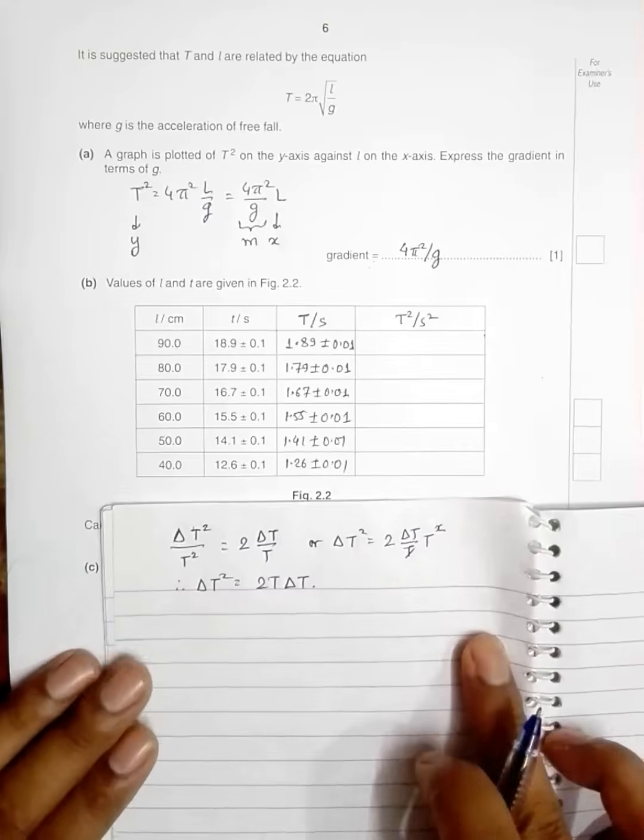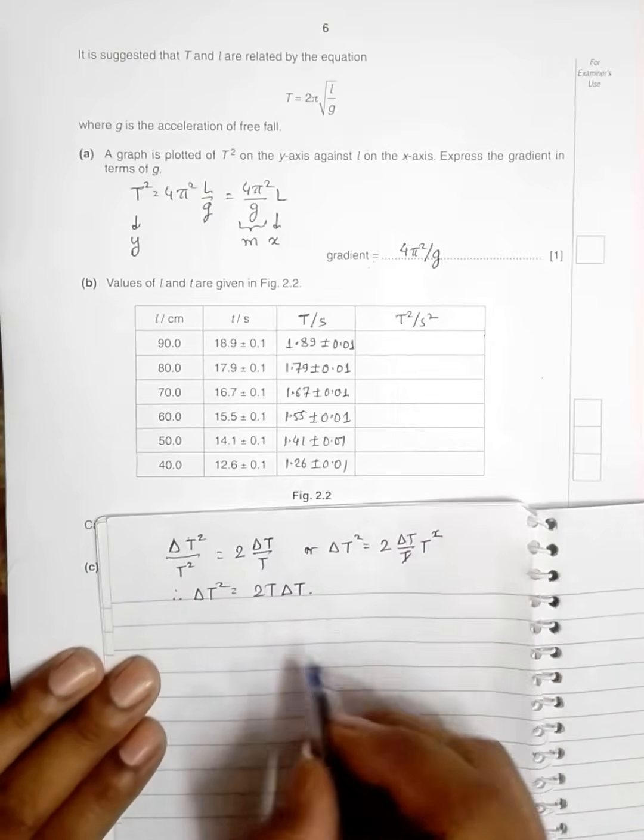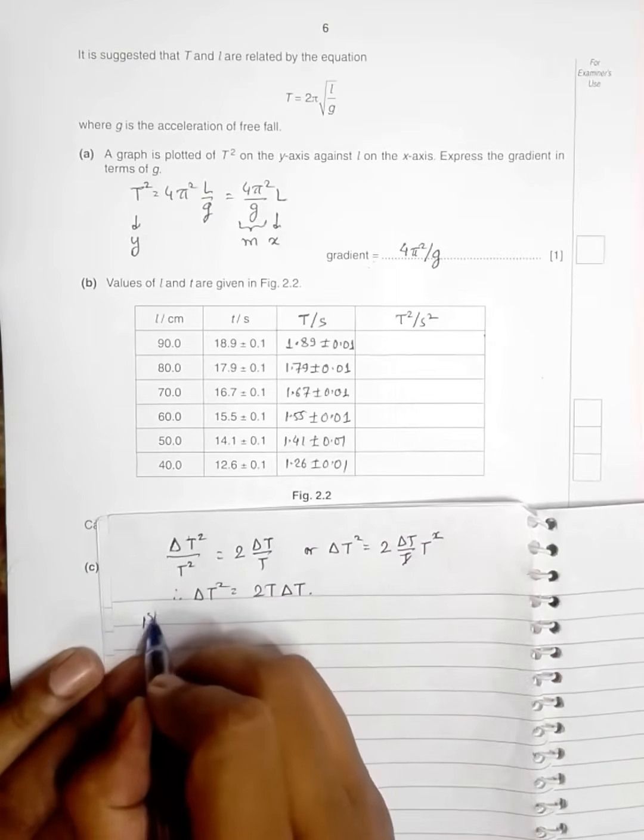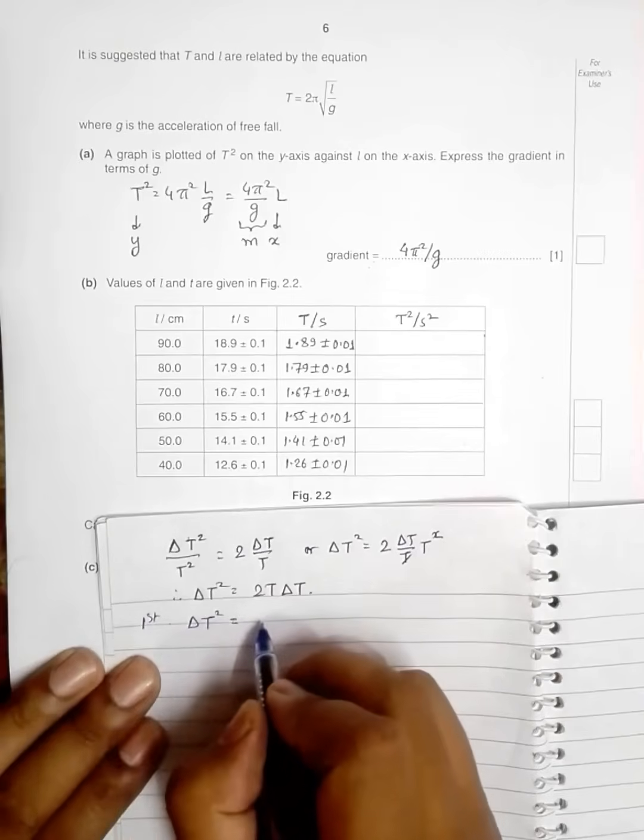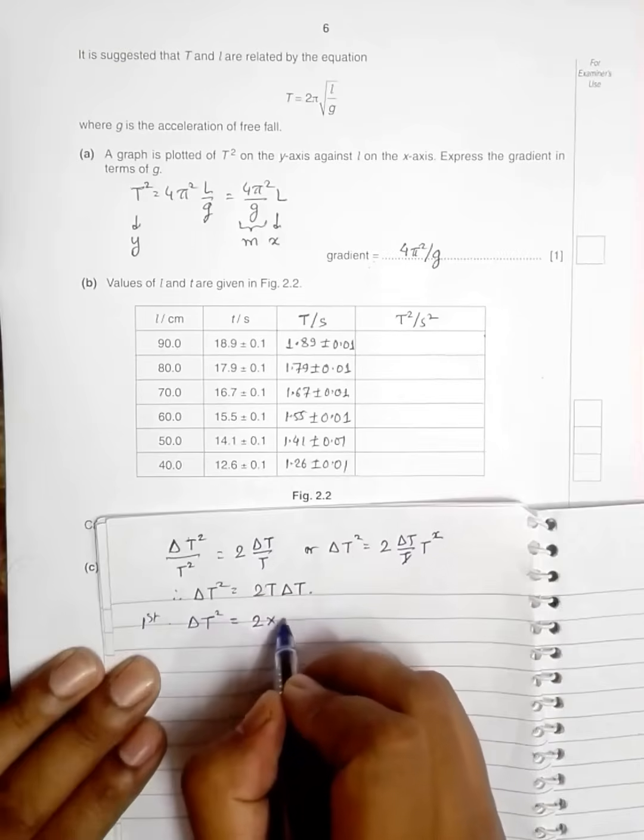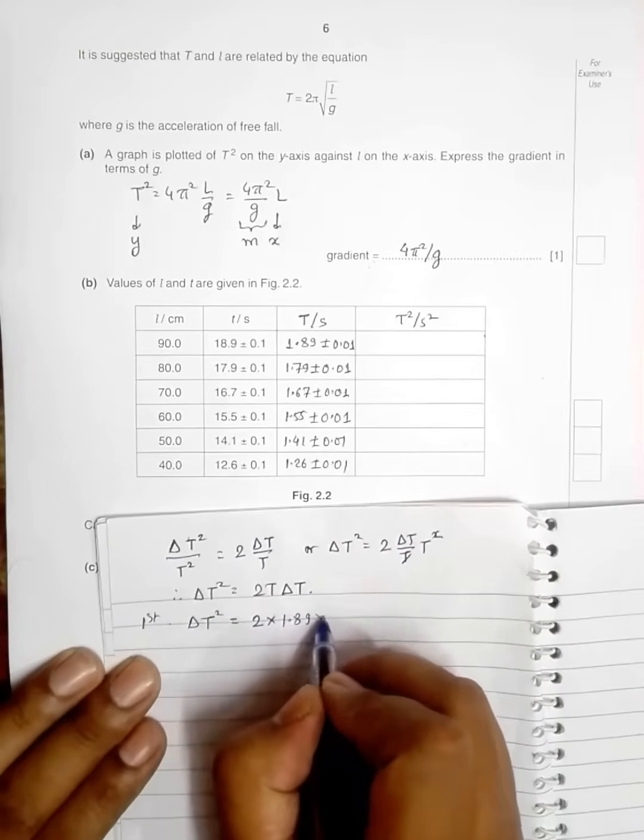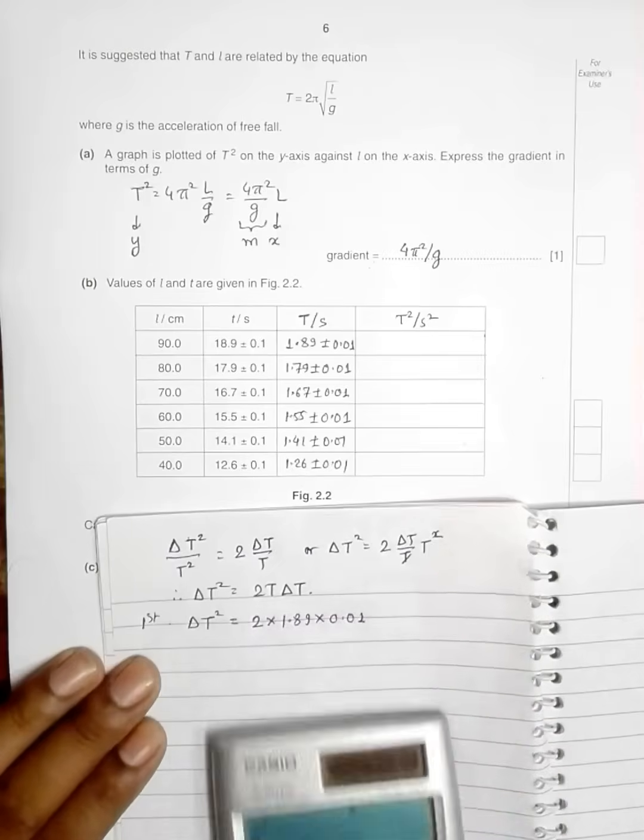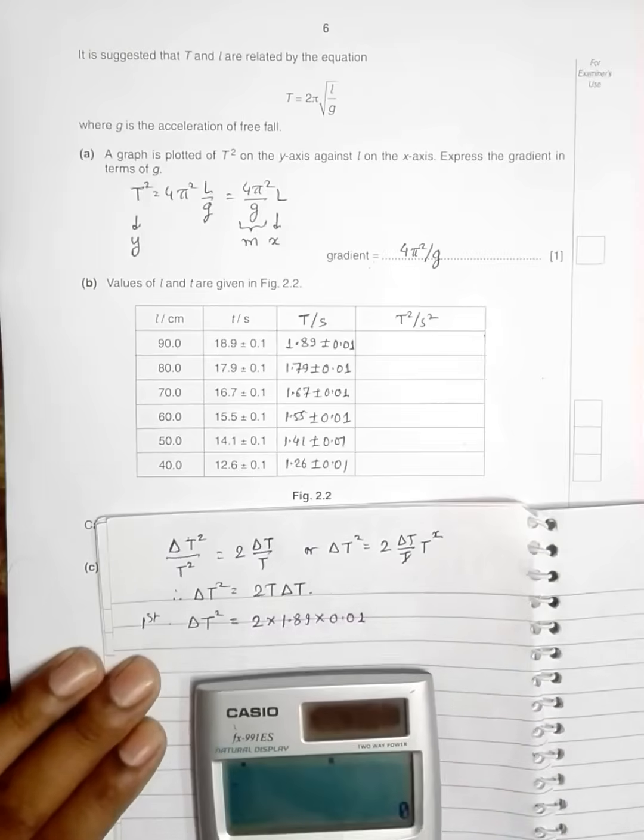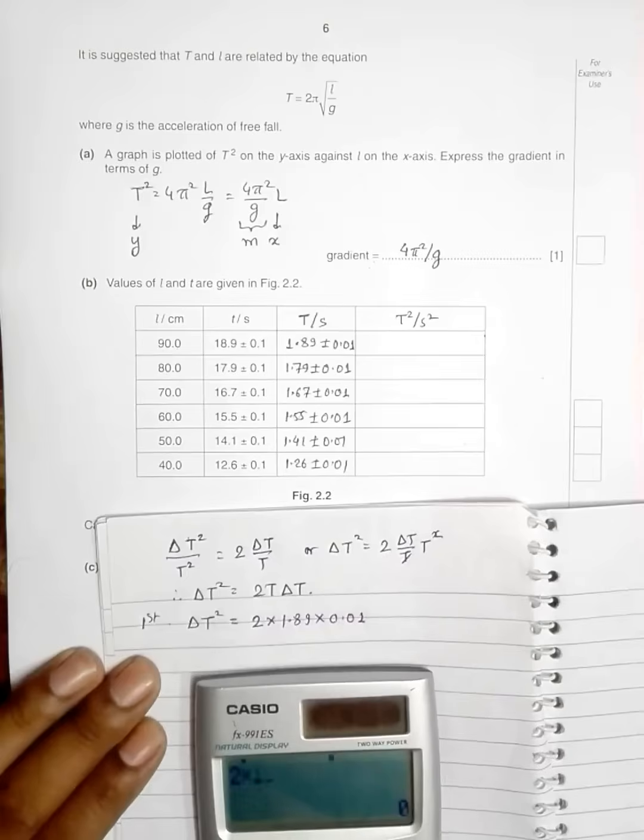Now if I do the same for the first data, I have ΔT² = 2 × T is 1.89 × 0.01. So this will give me, if I do the calculations here, 2 × 1.89 × 0.01, equal to... this becomes 0.0378.